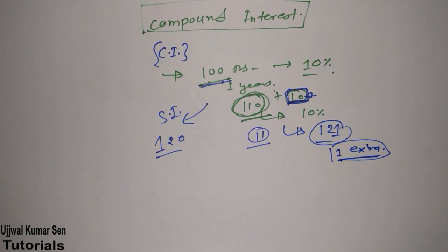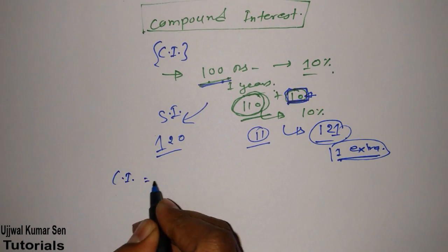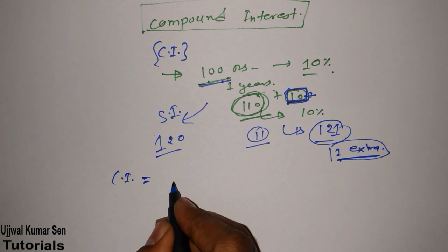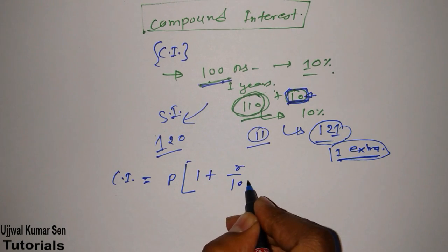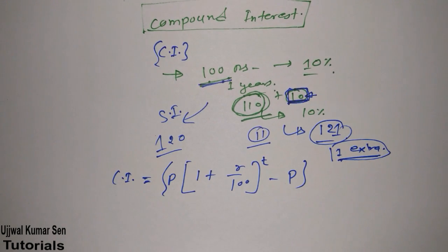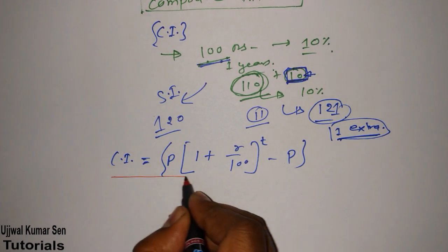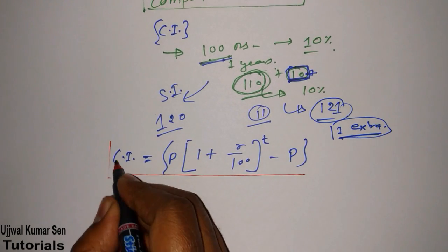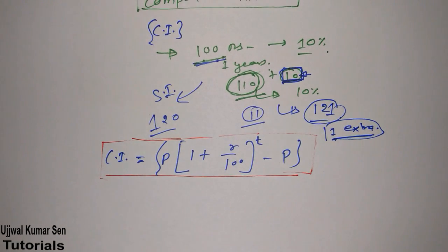This is how you can differentiate simple interest and compound interest. To find out compound interest, the formula is: CI = P × (1 + R/100)^T − P. This formula is used when interest is compounded annually.